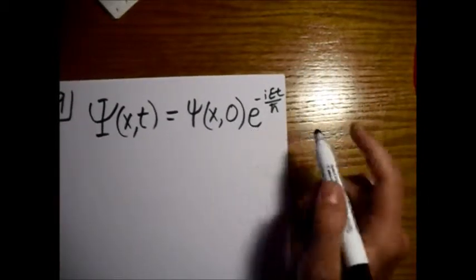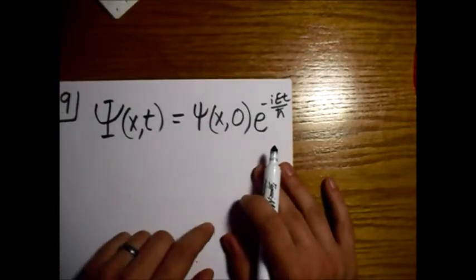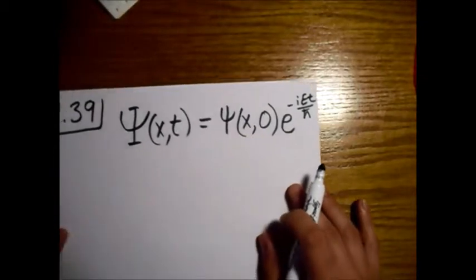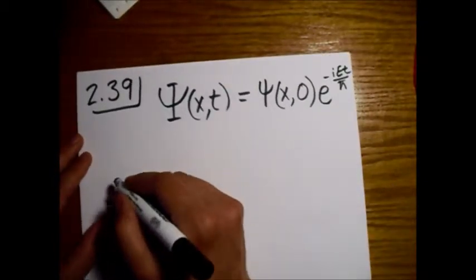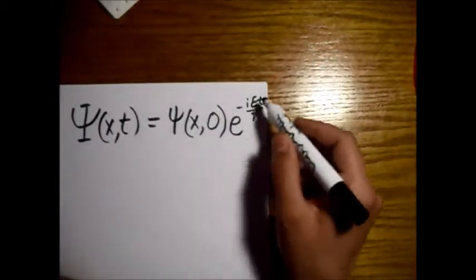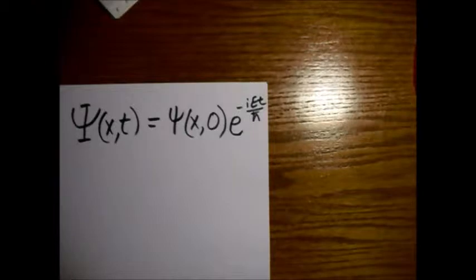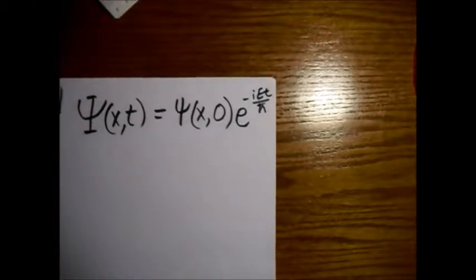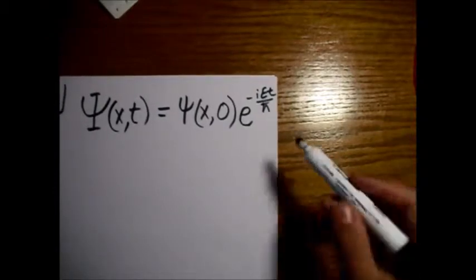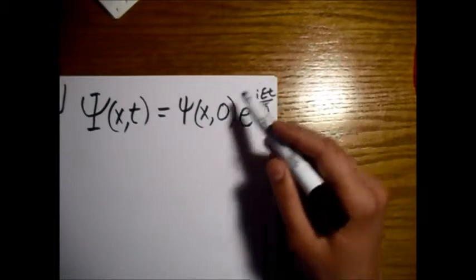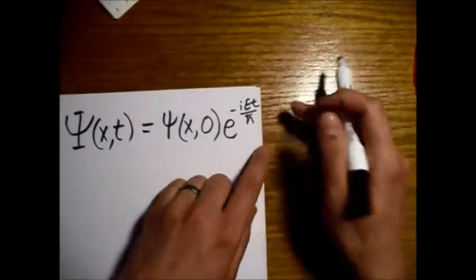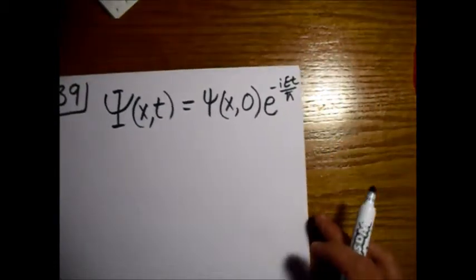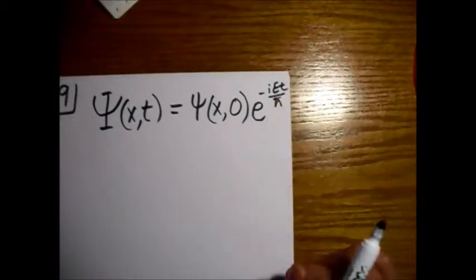So this is the part that we're going to be looking at to find out basically when will this state look like this one again. And whenever you have a complex exponential it's oscillating, right? So what we want to know is the period of oscillation. If this is oscillating it will return to the same point.